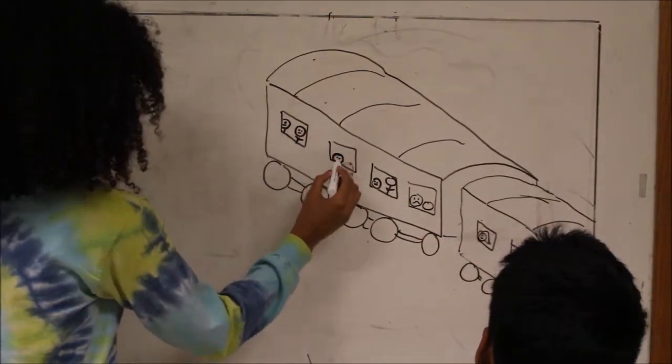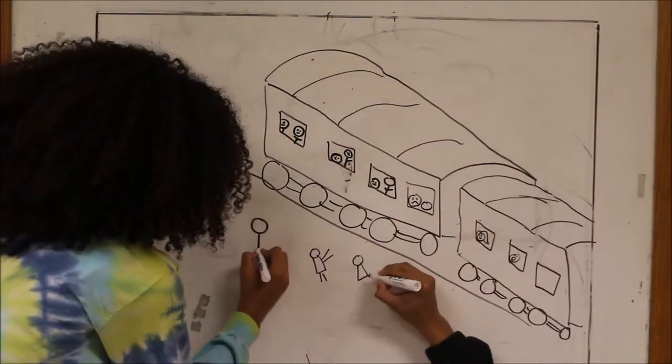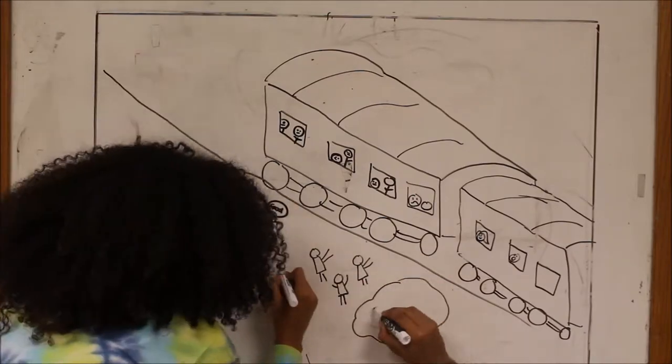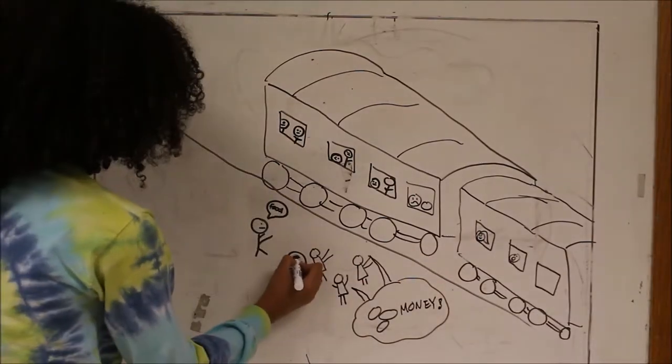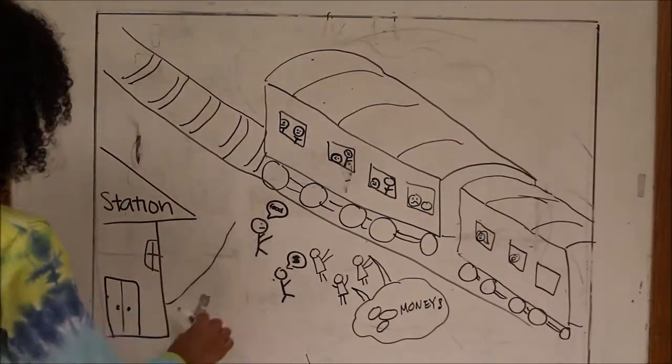This train is full of a bunch of rich white people coming from England, and this train is instantly swarmed by a bunch of beggars. Merchants, beggars, people trying to get stuff so they can survive, because this train is the best source of money.